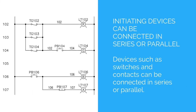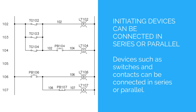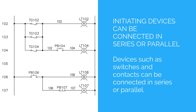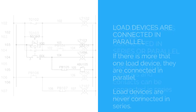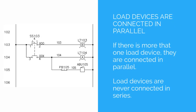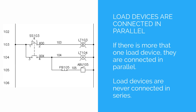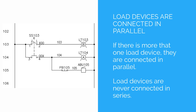Initiating devices can be connected in series or parallel. Devices such as switches and contacts can be connected in series or parallel. Load devices are connected in parallel — if there is more than one load device, they are connected in parallel. Load devices are never connected in series.